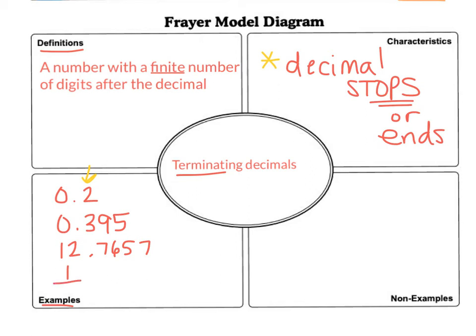How about a fraction? One-half. If I did 1 divided by 2, I would get 0.5, which is a terminating decimal.